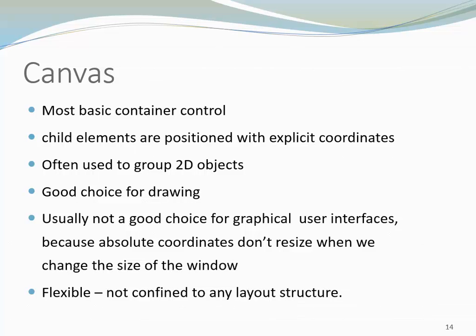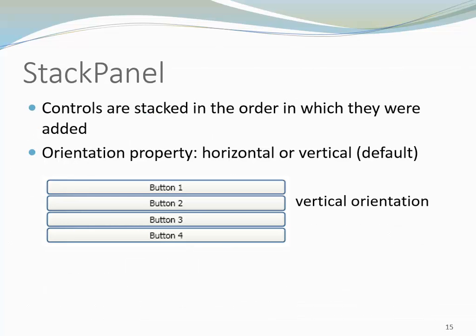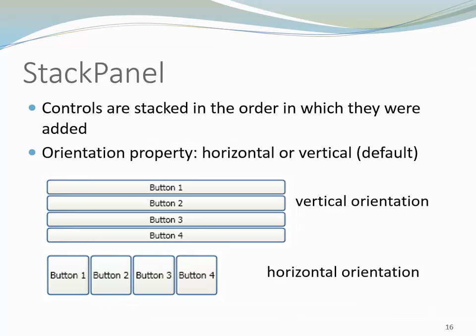A plus of Canvas is the flexibility, in the sense that we can place UI elements wherever we like and we are not confined by any layout structure. Another container is the Stack Panel. Stack Panels stack the controls in the order in which they were added. By default, the orientation is vertical, meaning one control is placed below the other one. However, this property can be changed. If we choose to have horizontal orientation, each control is placed right next to the control that was added last.